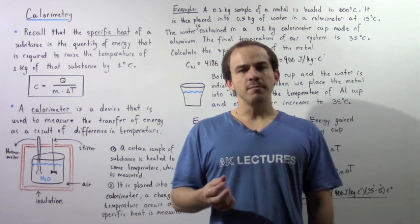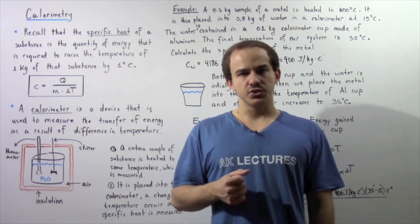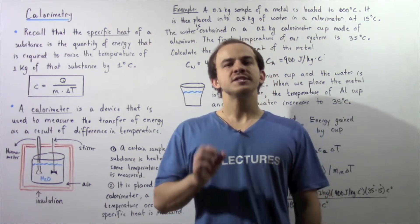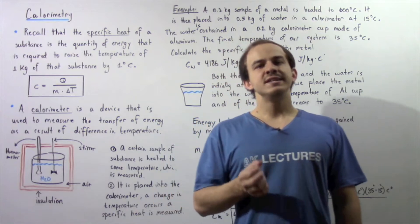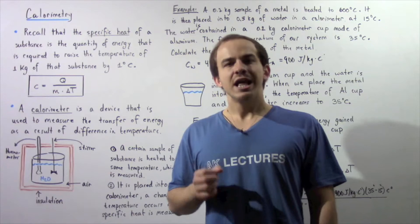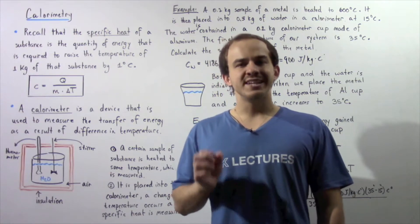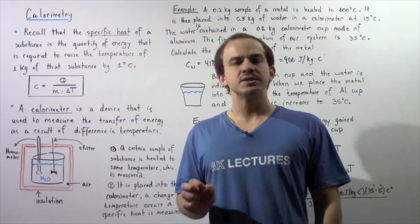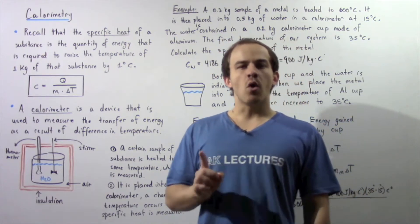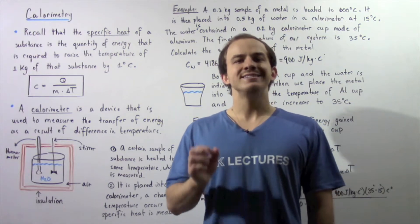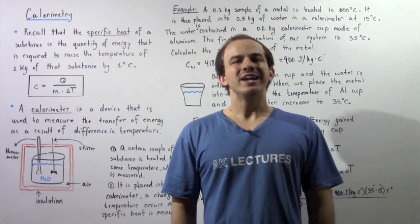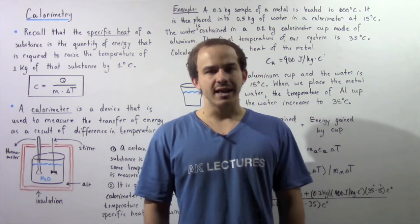What exactly is a calorimeter and what are its uses? Before we define what a calorimeter is, let's recall specific heat. The specific heat of a substance is simply the quantity of energy required to raise the temperature of one kilogram of substance by one degree Celsius. For example, it requires 4186 joules of energy to raise the temperature of one kilogram of water by one degree Celsius.